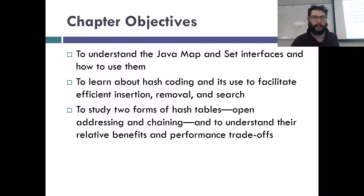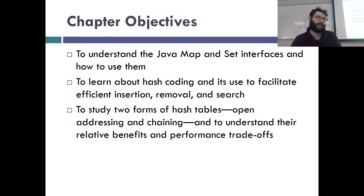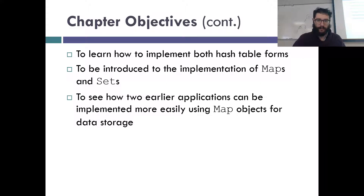If you want to keep data in order, you need a tree — that's the best you can do. If you don't care about order, hash tables are the way to go. That's why Java has both a HashMap and a TreeMap, and a HashSet and a TreeSet — the distinction is whether or not you care about your data being ordered.